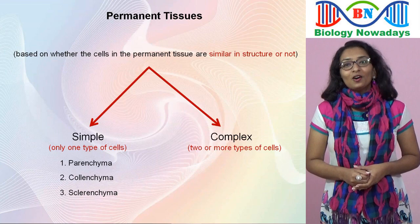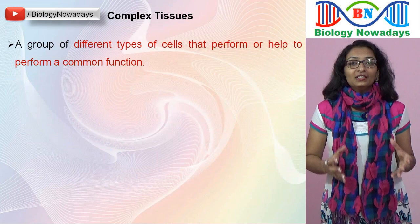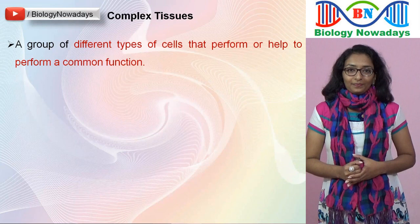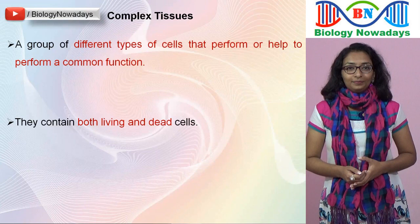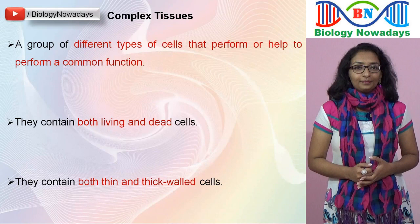A complex tissue is a group of different types of cells that perform or help to perform a common function. Simple tissues are composed of either living or dead cells, but complex tissues contain both living and dead cells. Complex tissues also contain both thin-walled and thick-walled cells. Two complex tissues found in plants are xylem and phloem.